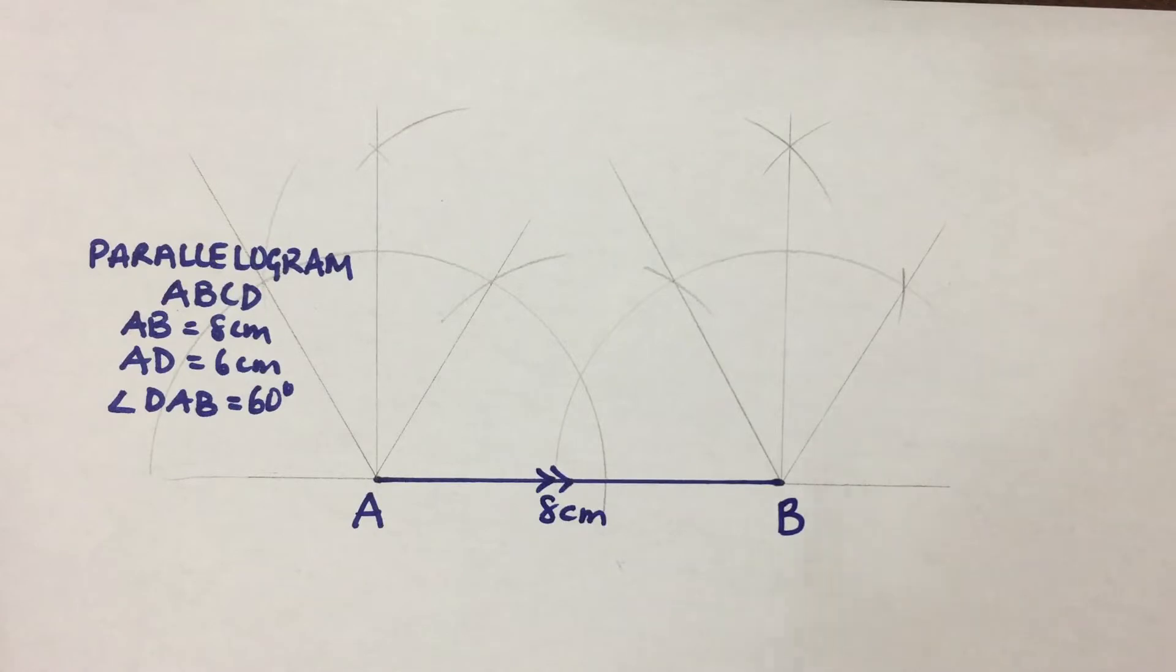Now, again, how do we construct our template? The first length that CSEC gives us, we're going to put that as the base. And the first length that they give us is 8 centimeters. So then AB is 8 centimeters.